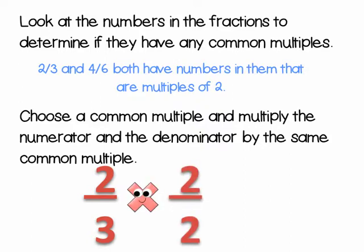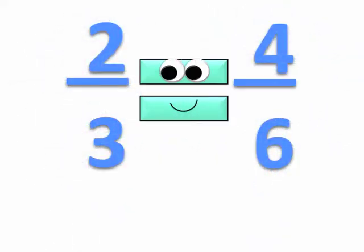In this case, we're going to multiply two-thirds by two over two, and we get four-sixths. So, two-thirds and four-sixths are equivalent fractions.